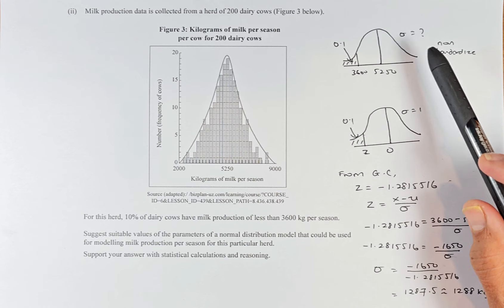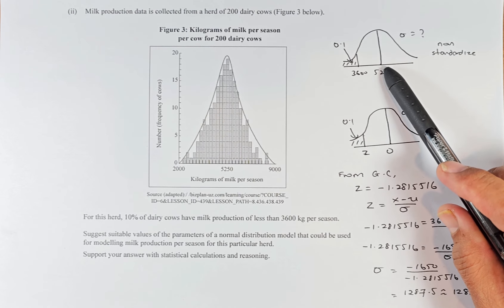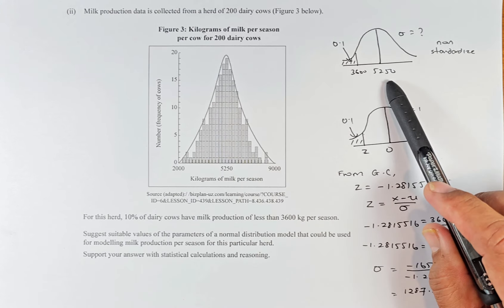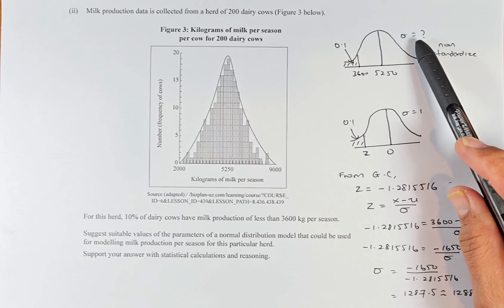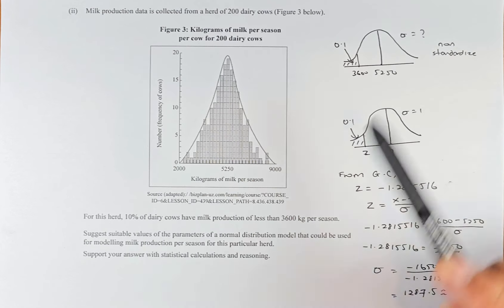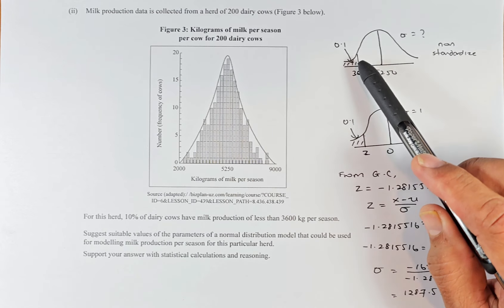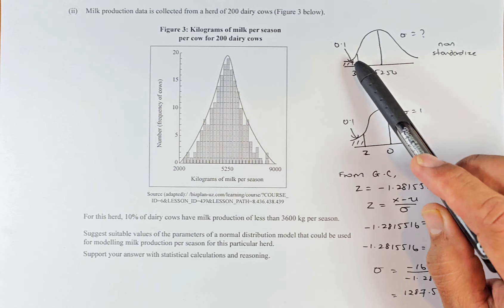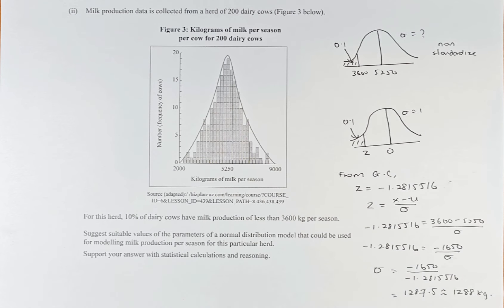So we're going to draw a normal distribution. The mean is 5,250 from here. And they say we need to calculate the standard deviation based on the question later. And we know that less than 3,600 is 0.1 or 10%. So suggest suitable values of the parameter of the normal distribution model that could be used to model the milk production per season for this particular herd. Support your answer with statistical reasoning.